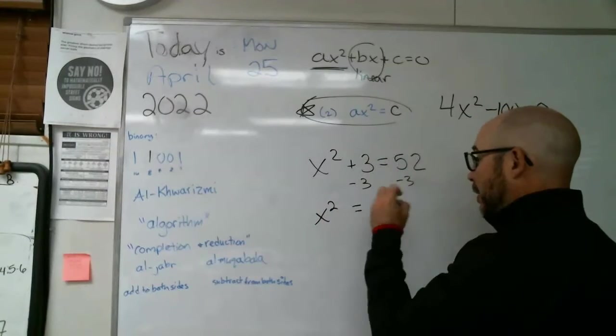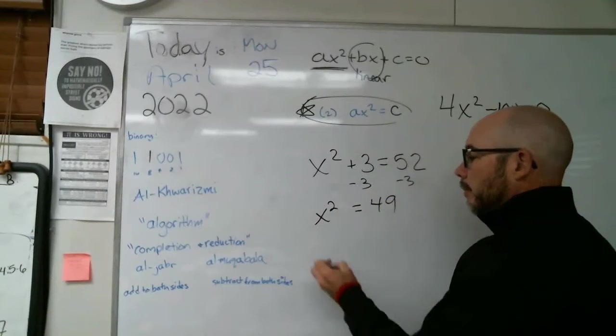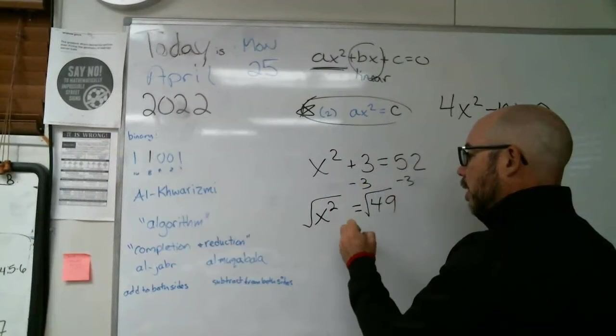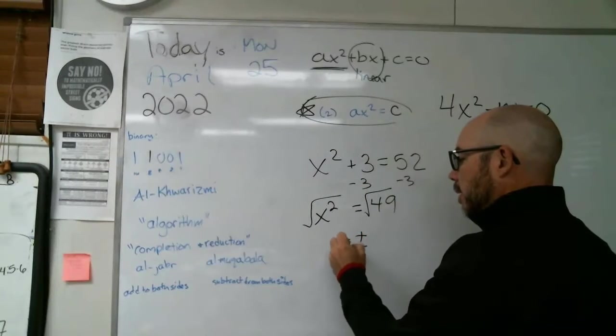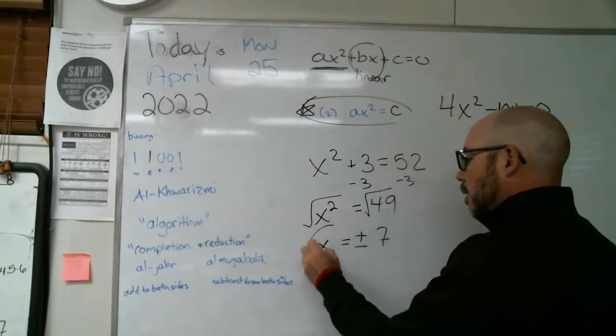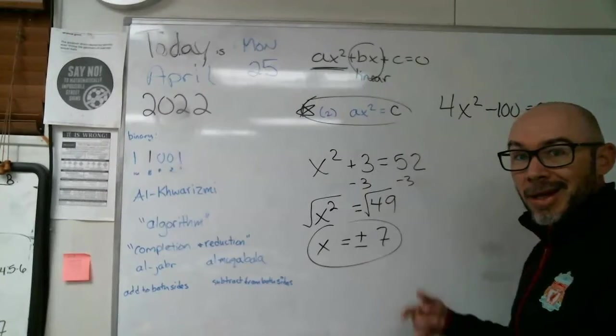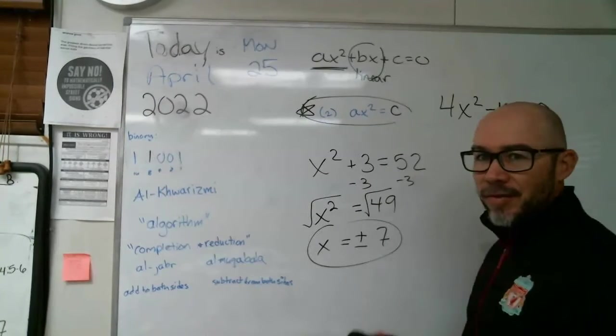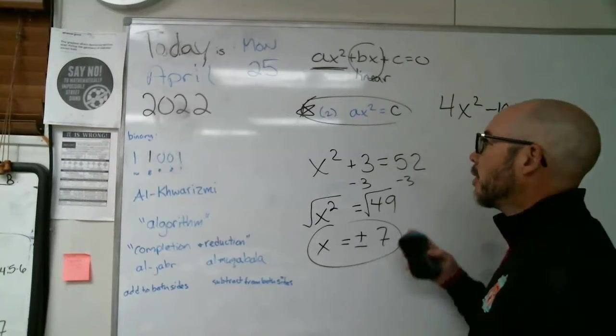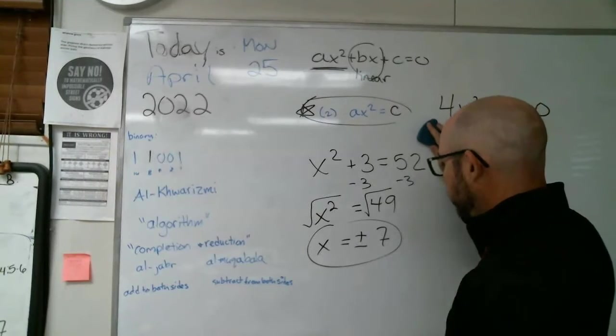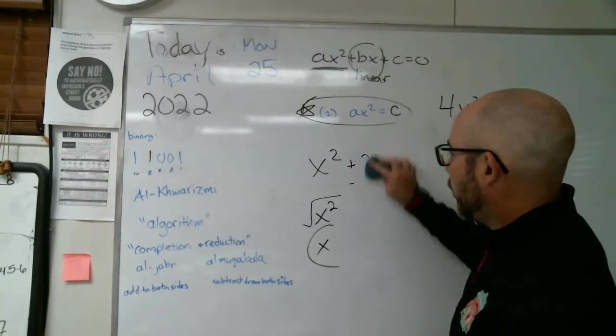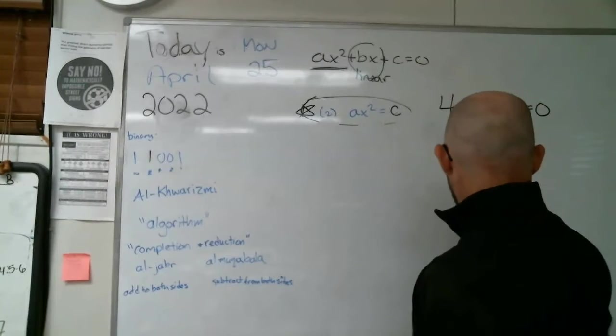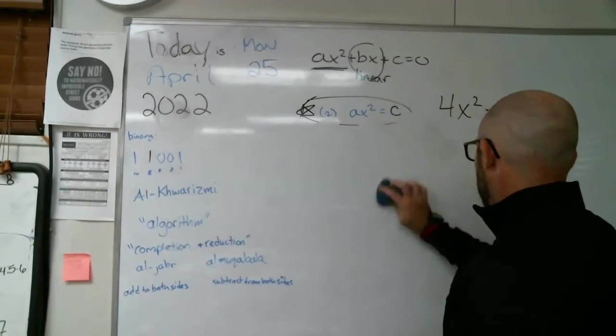So this would give us x squared equals 49. Take the square root of both sides. Remember, there's a plus and the minus version of the answer. Same exact answers that we had doing it the other way. It depends on what you like to do. I like the difference of two squares. It's one of my favorite things in the world. Besides the Liverpool football club and bacon.